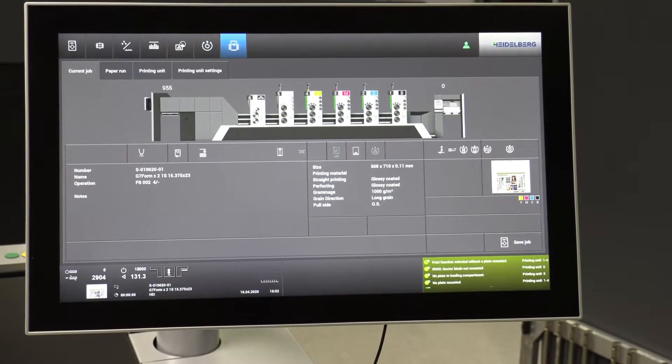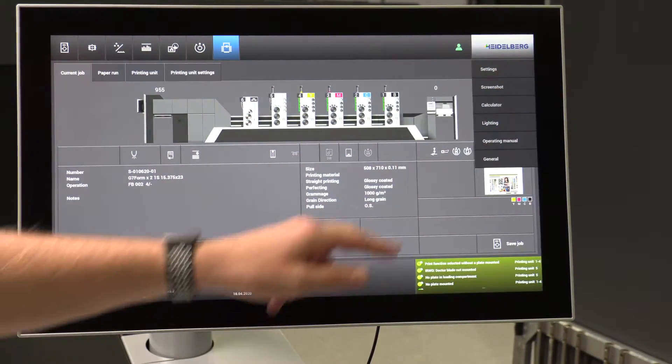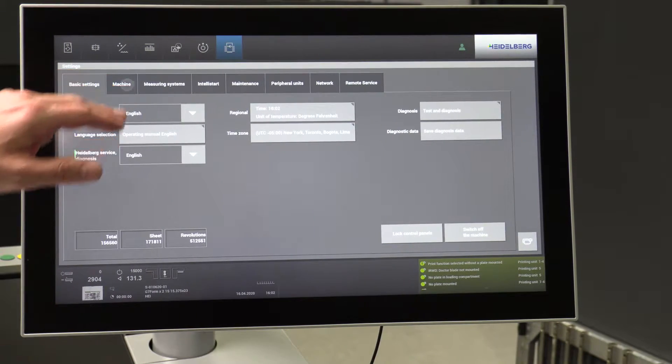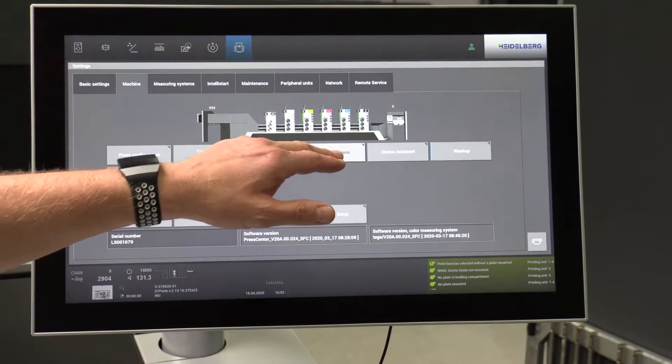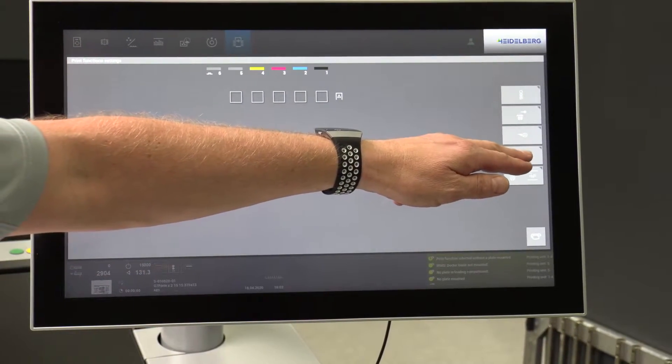So the function that we are going to show you today is our roller check assistant. We highlight the settings button, we then come into the machine part of the screen and select print function. From here we've got various functions. We are going to select roller check assistant.